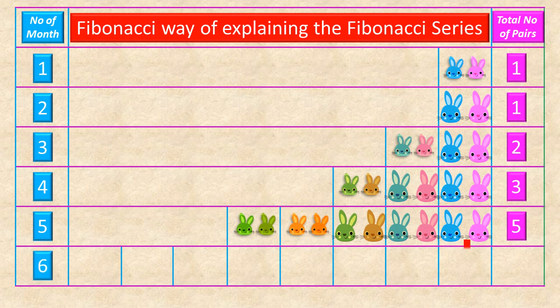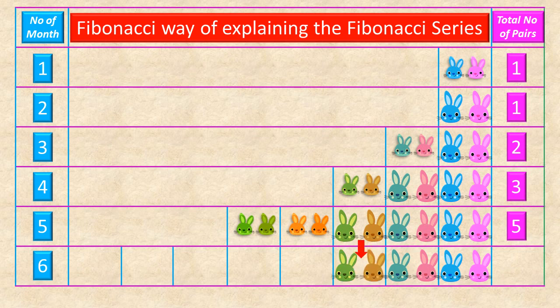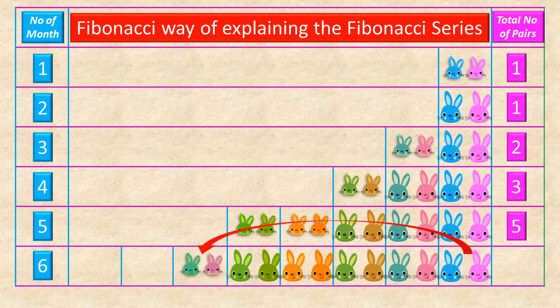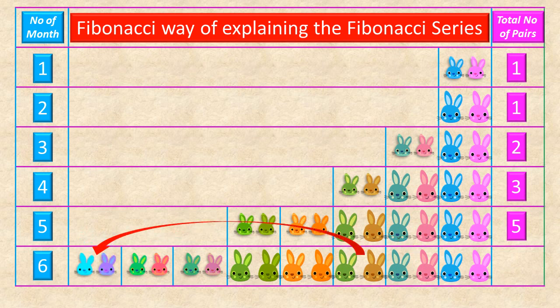During the sixth month, the first pair is six months old, the second and third pairs are three months old. The fourth and fifth pairs are two months old and attain adulthood. The first adult female again gives birth to a new sixth pair, the second adult female gives birth to a new seventh pair, and the third adult female gives birth to a new eighth pair of baby rabbits. At the end of the sixth month, the total pair of rabbits is eight.